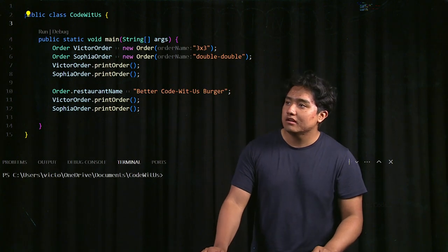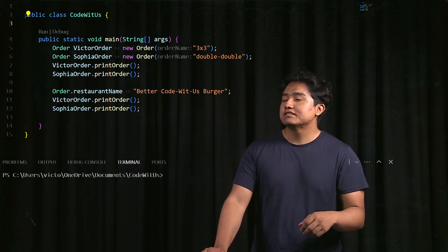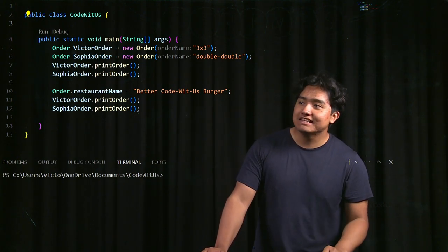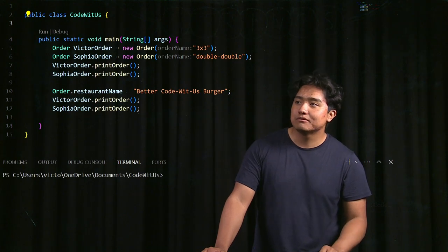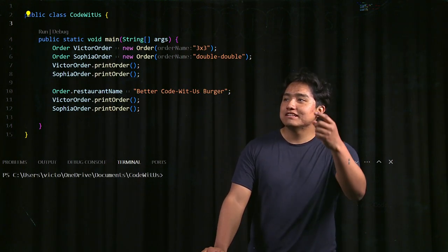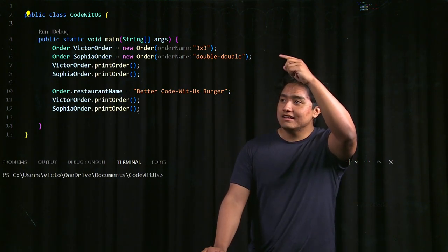So let's talk about our example. My friend Victor orders a three by three and my friend Sophia orders a double double. So the way we would show that is we would create two instances of the order class...